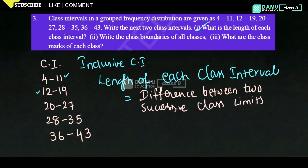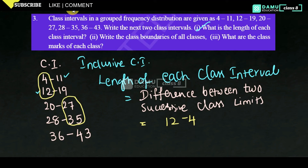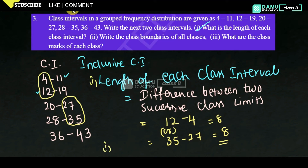So we take 12 minus 4, using the lower limits, and we get 8. Or we can take the upper limits: 35 minus 27 also equals 8. So the length of each class interval is equal to 8.